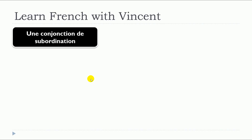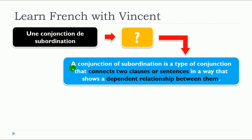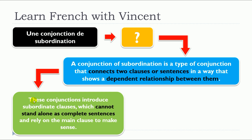So, let's start from the beginning with the question: what is une conjonction de subordination? A conjunction of subordination is a type of conjunction that connects two clauses or sentences in a way that shows a dependent relationship between them. This is really, really important — this concept of dependent relationship between them. These conjunctions introduce subordinate clauses which cannot stand alone as complete sentences.